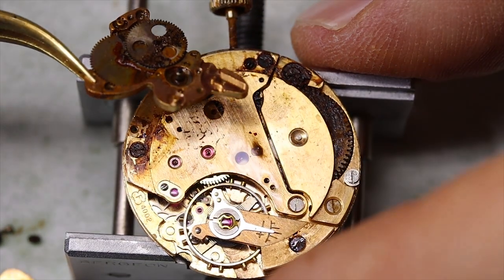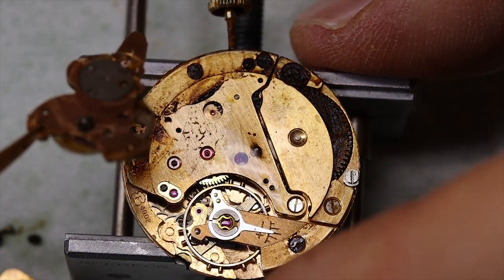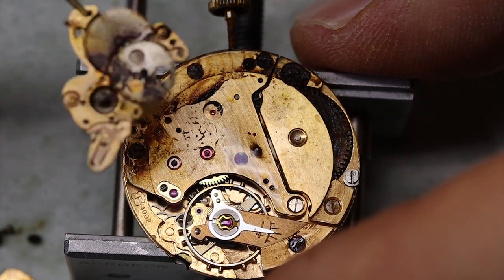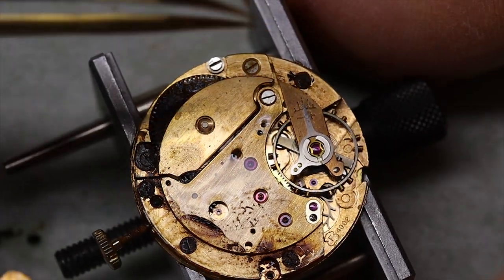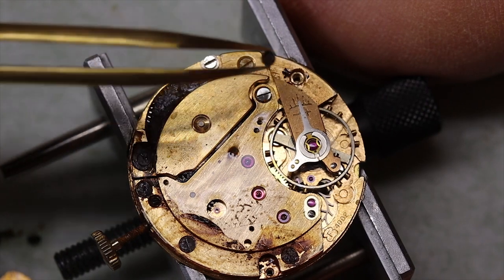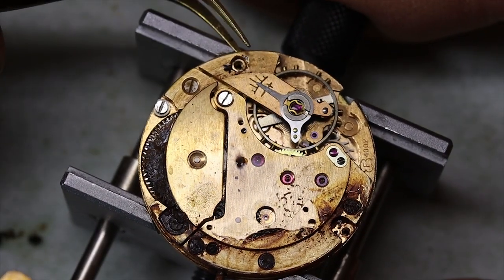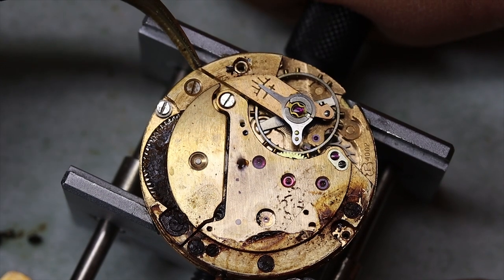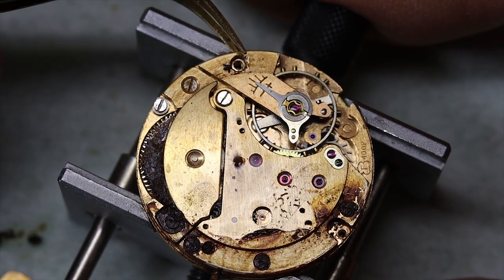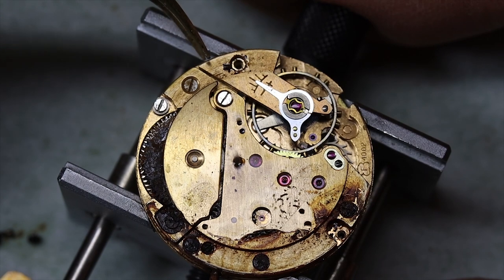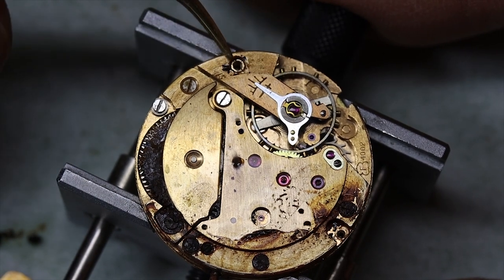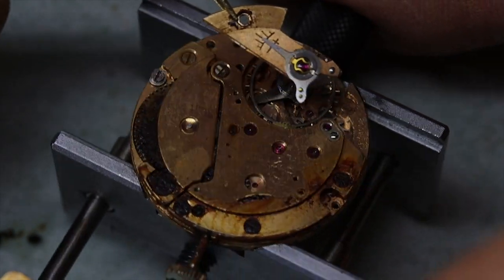All right, so we got the automatic bridge with the works on it on top out. Felsa was of course famous for the bidynator automatic system. This one does not use that system but it's a little bit similar. It's actually a pretty neat system, so we'll look at that in the assembly video. It's not very efficient but it's very simple.